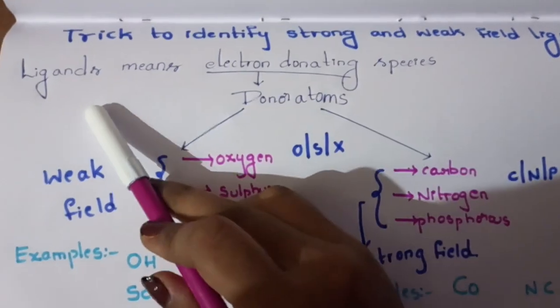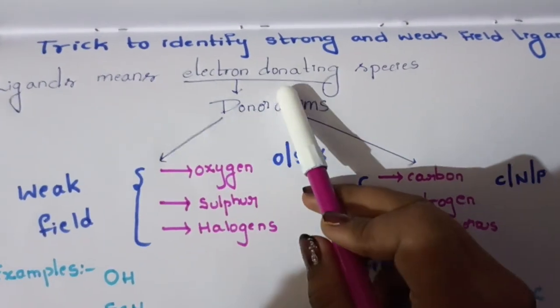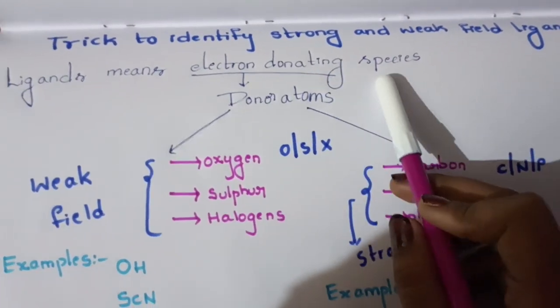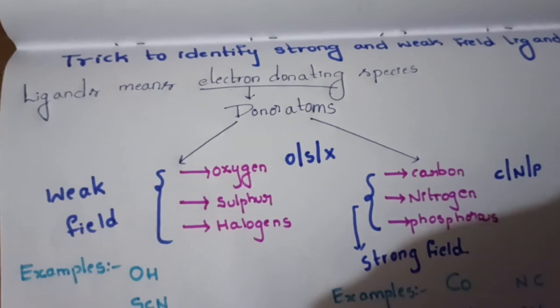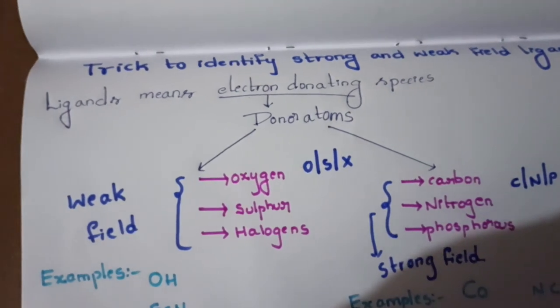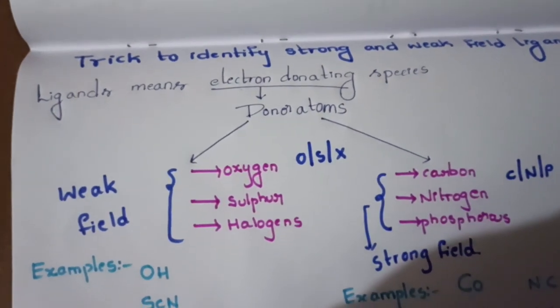Ligands are electron donating species. If we donate the electron pair, we know that as ligands.